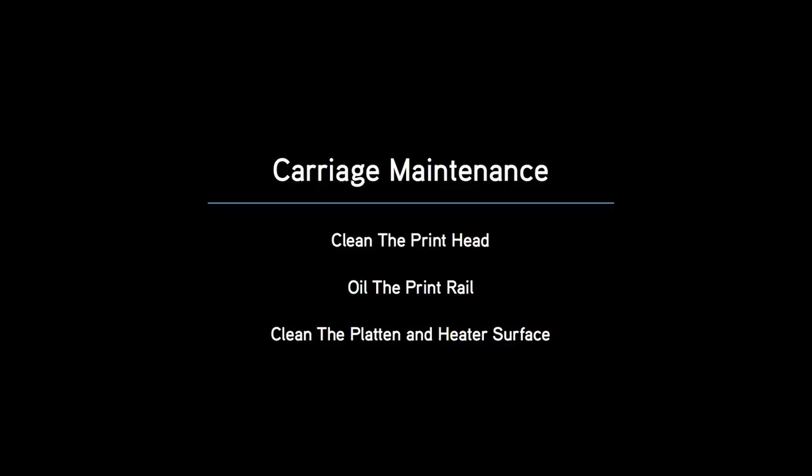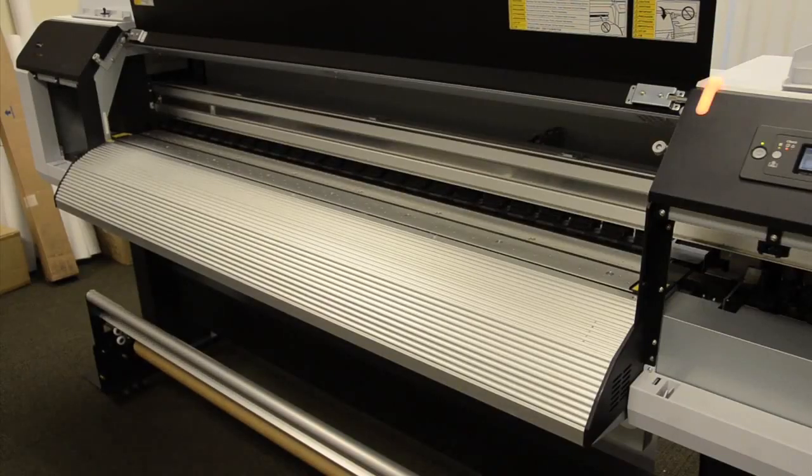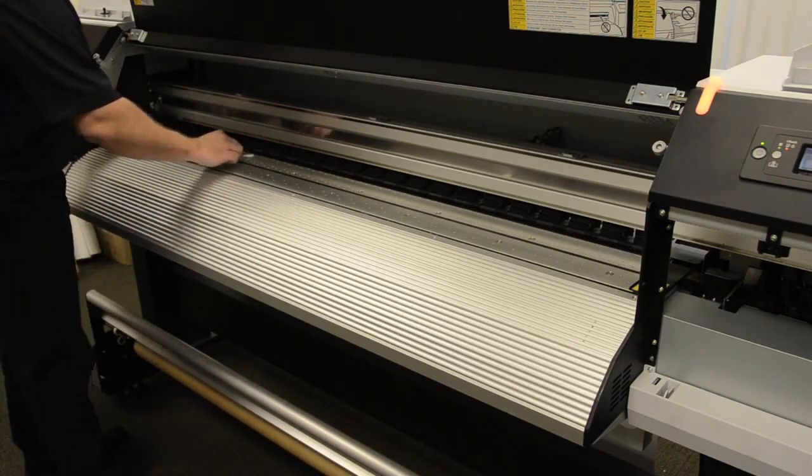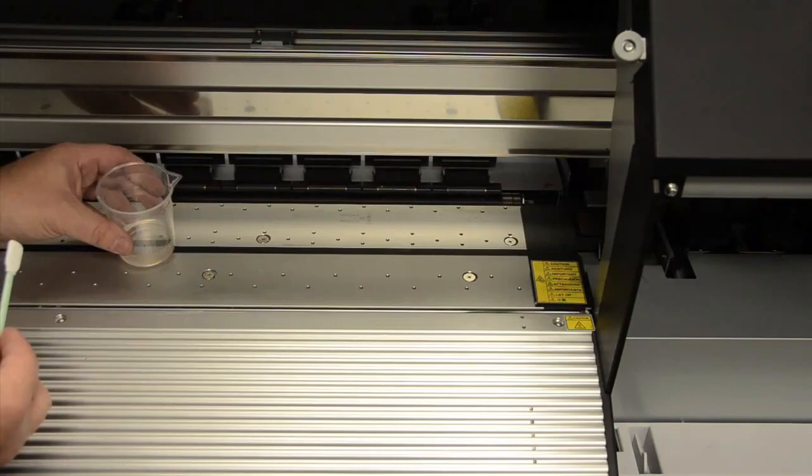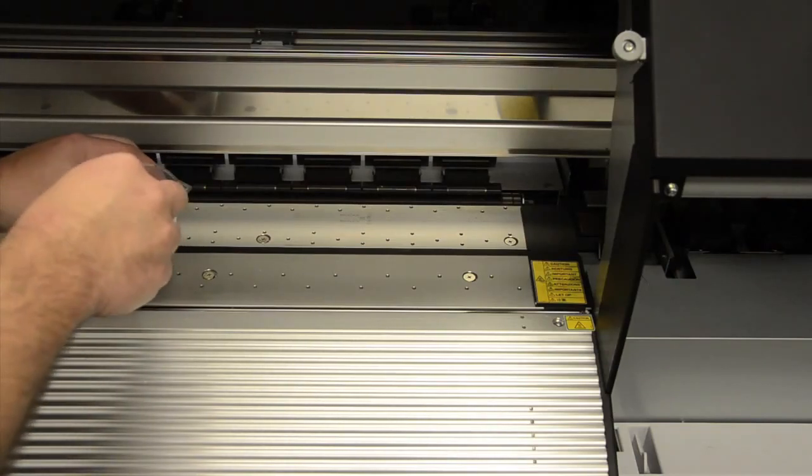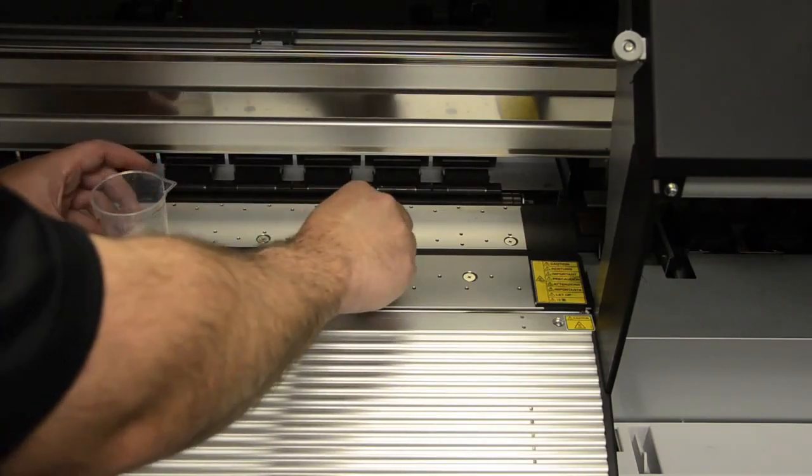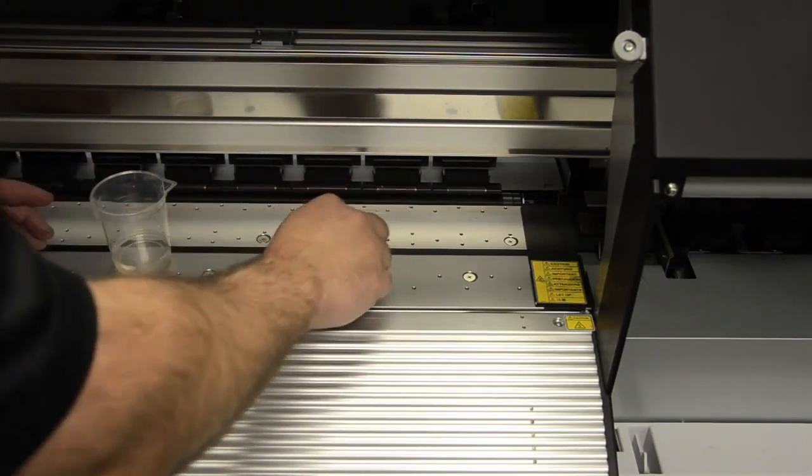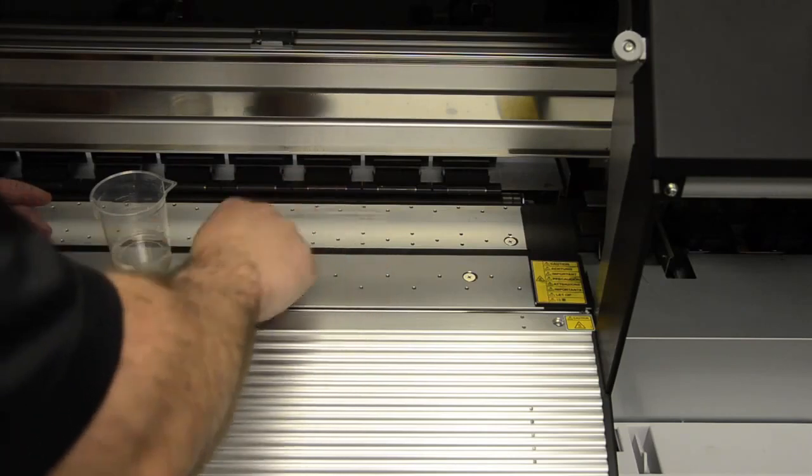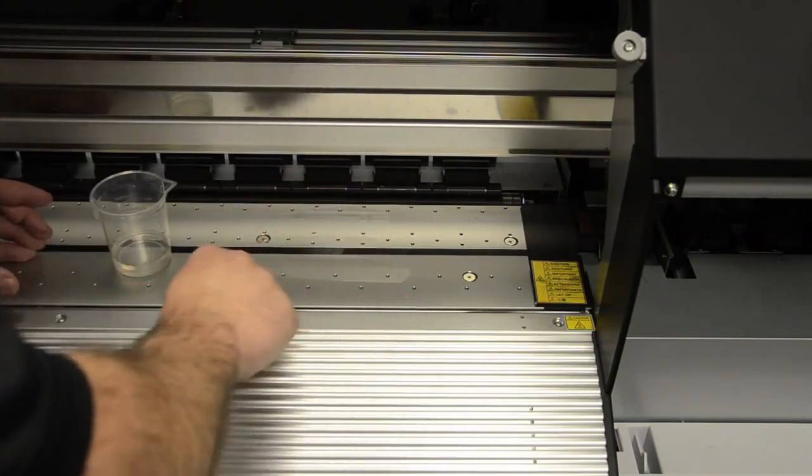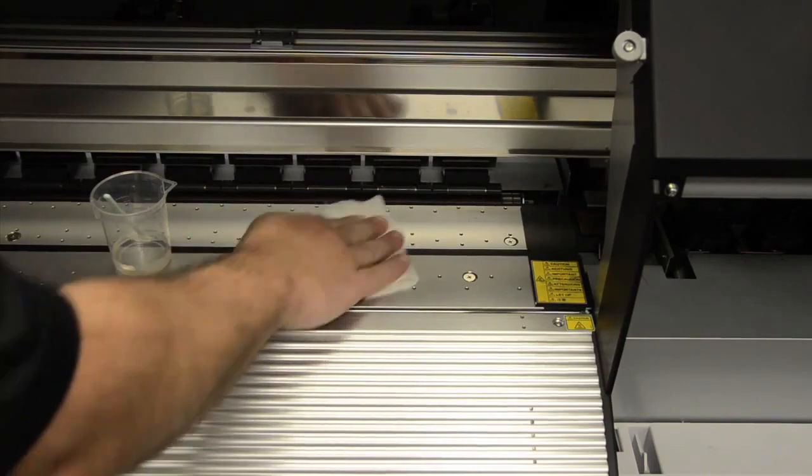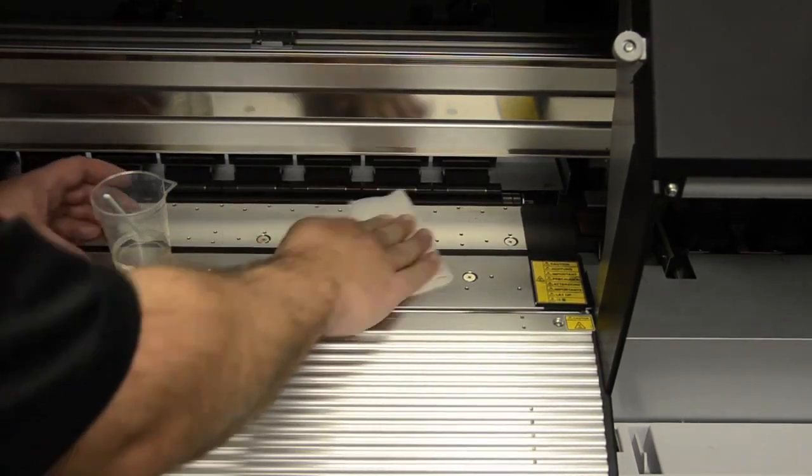Now we will show you how to clean the platen heater surface. To clean your platen heater surface properly, you will take one of your foam tip swabs, dip it into the cleaning solution, and gently rub out any ink spots or any debris that might be on the surface of the platen. Gently rub until all the ink or debris is removed, and then take a clean lint-free cloth and remove any excess cleaning fluid.